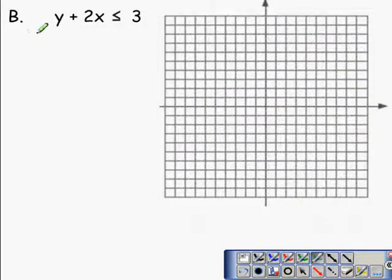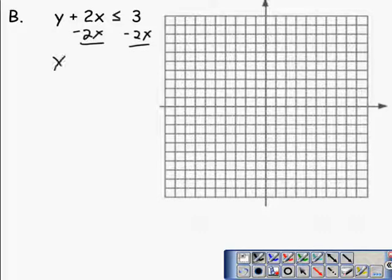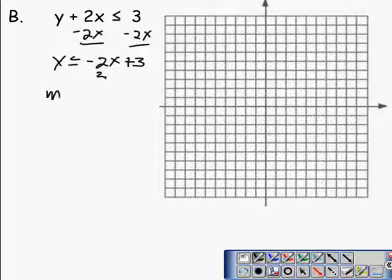We look at this particular equation, even though it's already with the x and the y on the same side, we can easily change this by subtracting 2x from both sides. And when we do that, that gives us y is less than or equal to negative 2x plus 3. From here, we can identify the slope m as negative 2 and the y-intercept as 3.